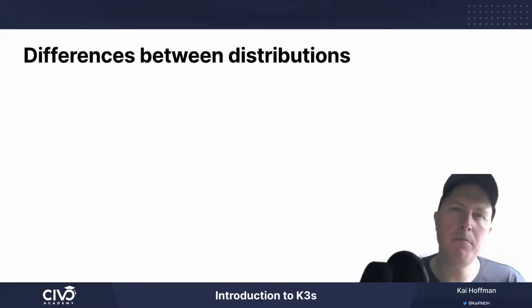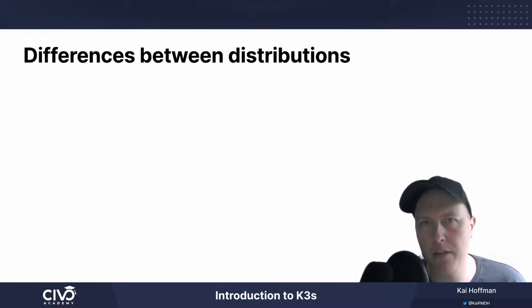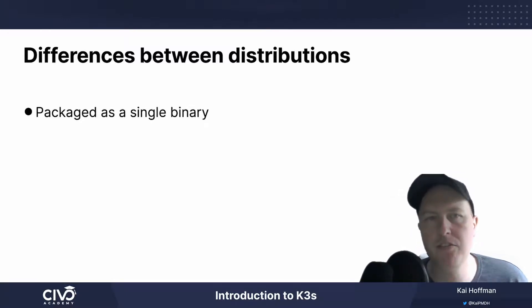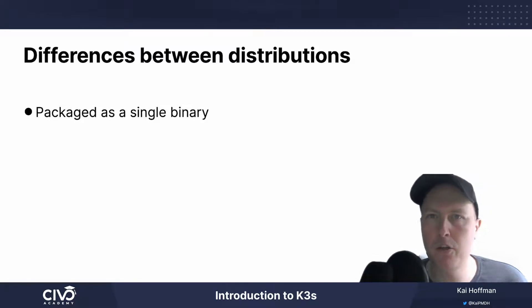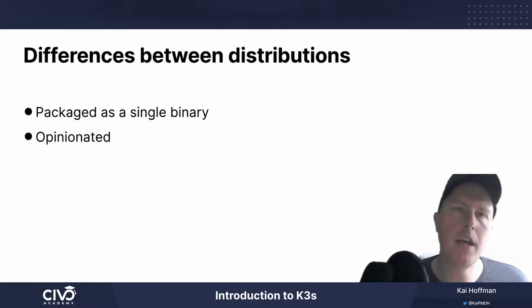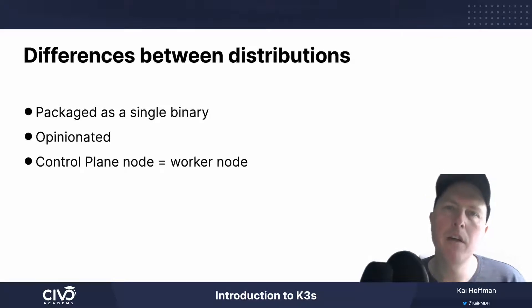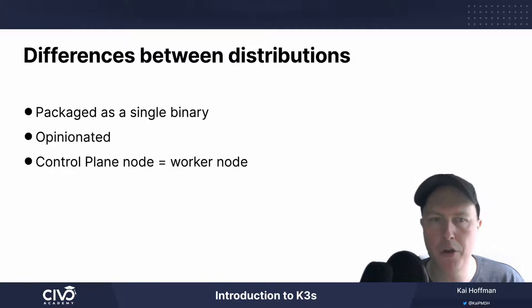Let's look at some differences between the distributions of Kubernetes — comparing K3S here with a sort of generic K8S. K3S is packaged as a single binary rather than composed of all the different components packaged separately. It's opinionated, and we're going to talk about this more later. And in K3S, the control plane can act as a worker node.